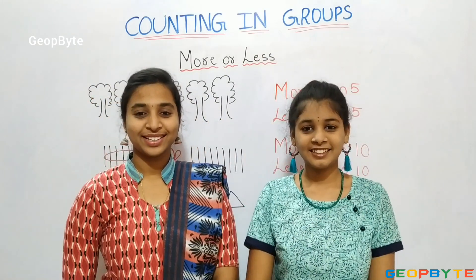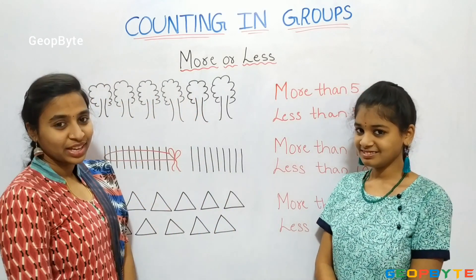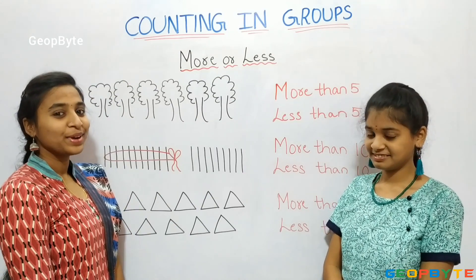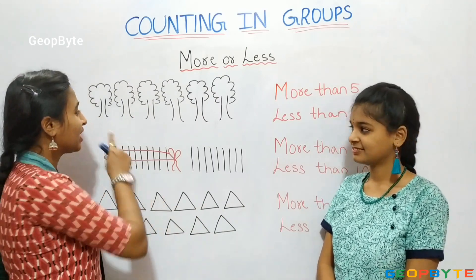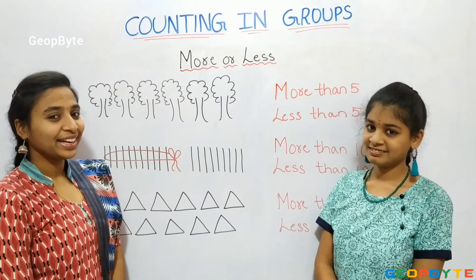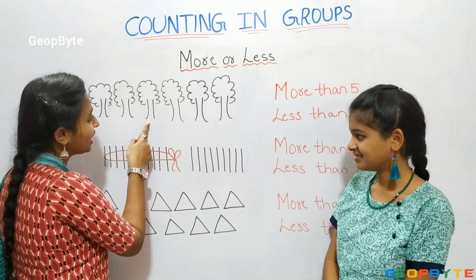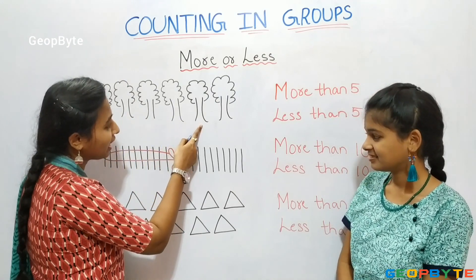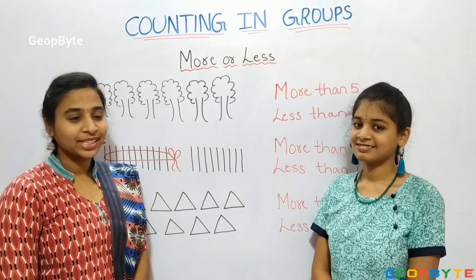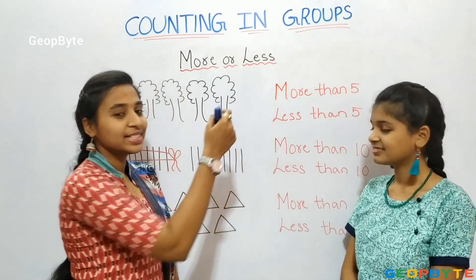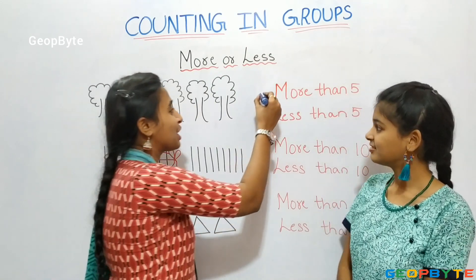More or less? Hey kids, see here we have few objects. Now, let us go one by one. First, let us go with trees. Let us count them. 1, 2, 3, 4, 5, 6. There are 6 trees. Is the number 6 more than 5 or less than 5? Yes, the number 6 is more than 5.